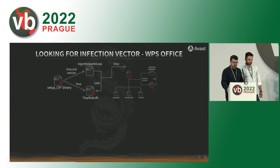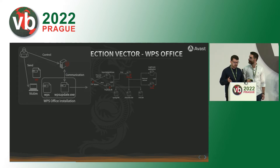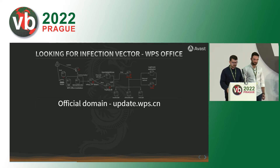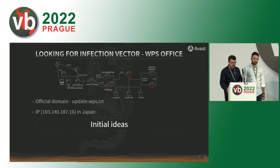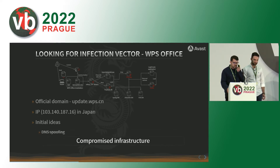Let's recap. Here are our three stages. The first stage was dropped by the WPS update process, which is the update process of WPS Office — the office suite developed by Kingsoft. This payload was downloaded from an official-looking domain, which was the WPS update domain. But it was served from an IP located in Japan with no relation to the Kingsoft company itself, which was pretty weird. We had a few ideas: DNS spoofing or a compromise of Kingsoft's infrastructure itself. But we could eliminate these theories by checking additional information.